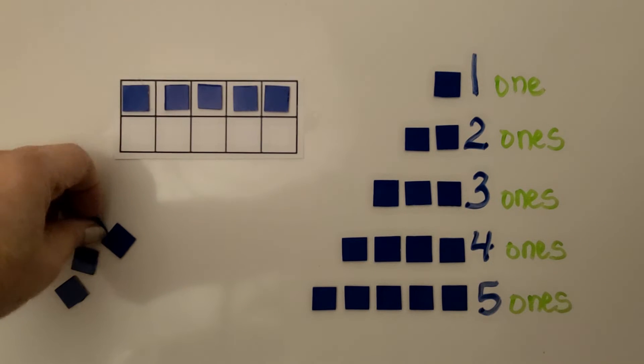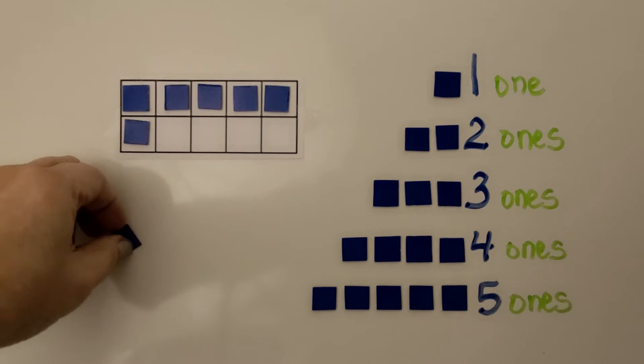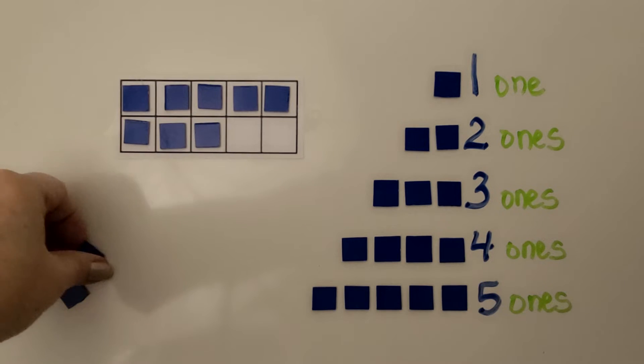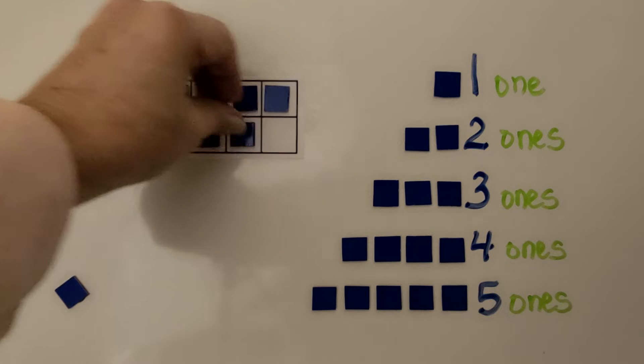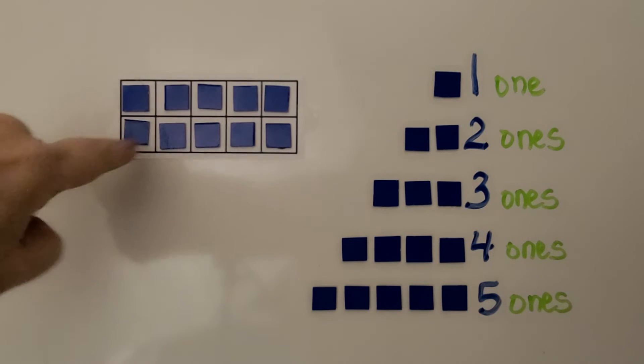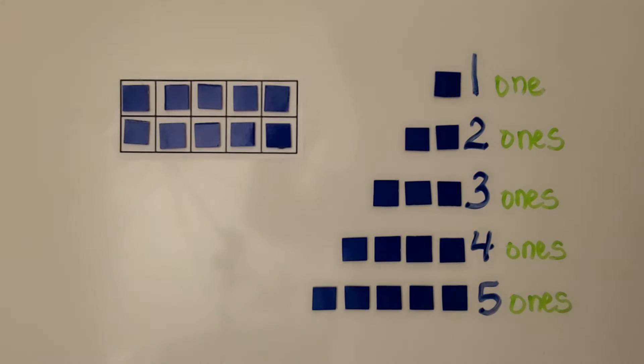We have five, six, seven, eight, nine, ten. The ten frame is full. Each counter is a one. We have 10 ones.